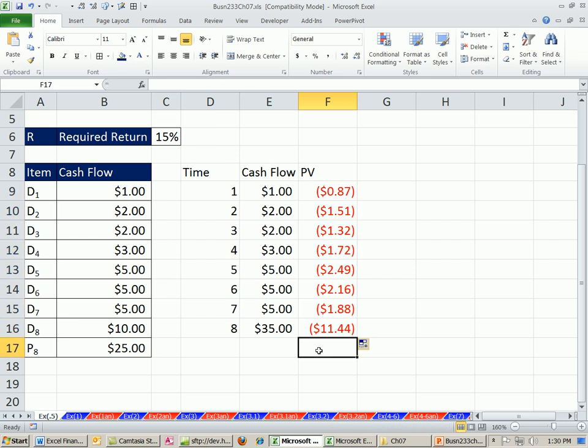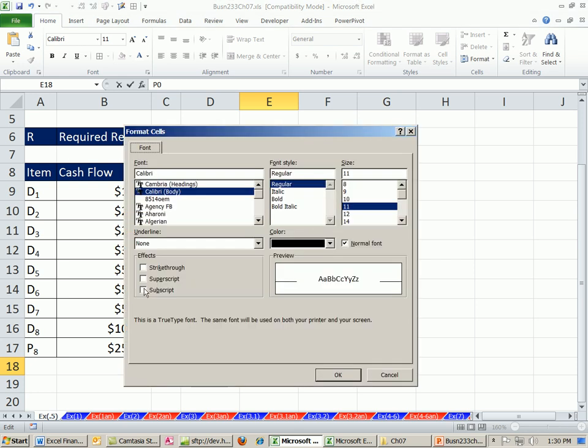Now I can come down here and Alt equals for auto sum. And then down here, I could say P0. I'm going to show you this great trick. See how we have these subscripts, and sometimes you want superscripts? You highlight this, and you've got to go to the font group, which is Control-Shift-F, and then click that right there. I do Alt-B. Control-Shift-F, Alt-B, Enter.